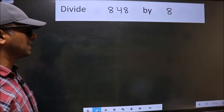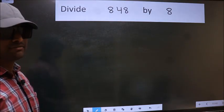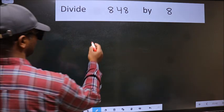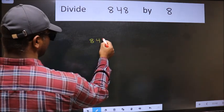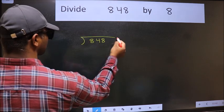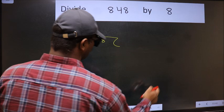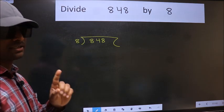Divide 848 by 8. To do this division, we should frame it in this way: 848 here and 8 here. This is your step 1.